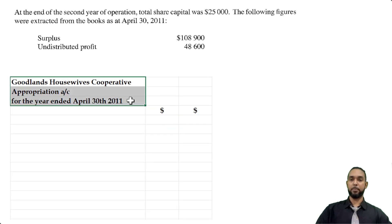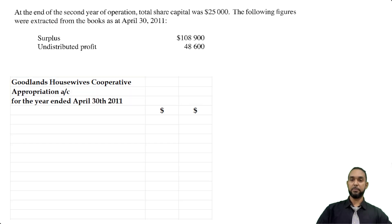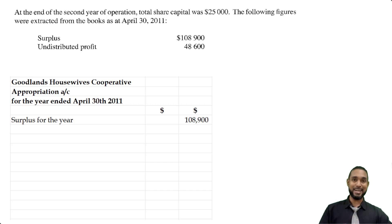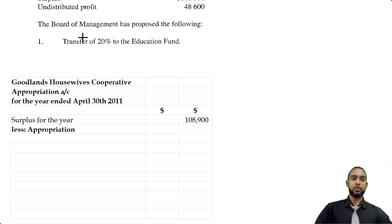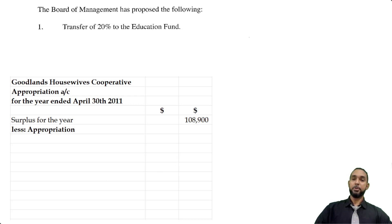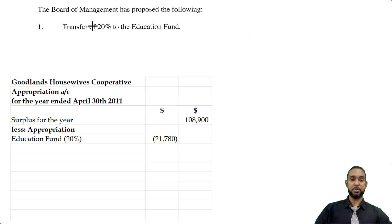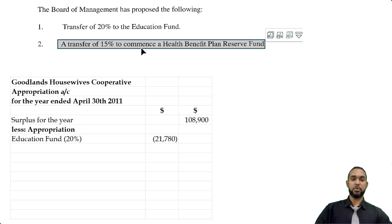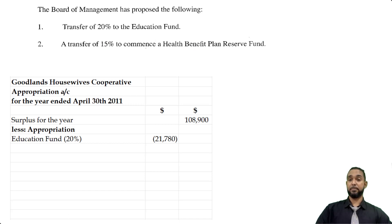Goodlands Housewives Cooperative — Appropriation Account for the year ended April 30th, 2011. The first item to put in is the surplus of $108,900. Now we are going to appropriate that surplus, so you're going to see less appropriations. The first thing is the transfer of 20% of that surplus to the education fund — 20% of $108,900 gives us $21,780 going to the education fund. Next, we have a transfer of 15% to commence a health benefit plan reserve fund — 15% of $108,900 gives us $16,335.